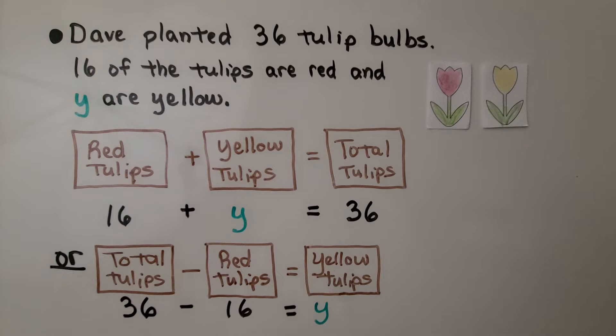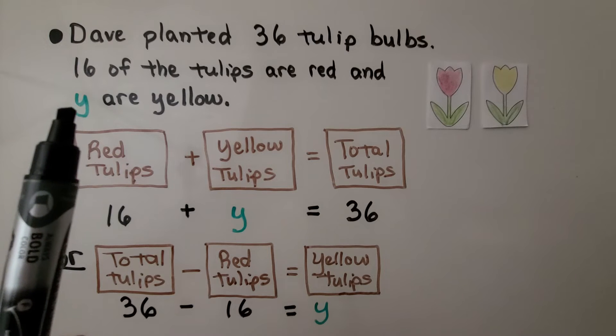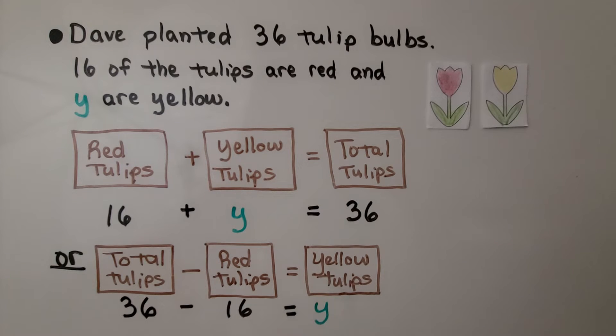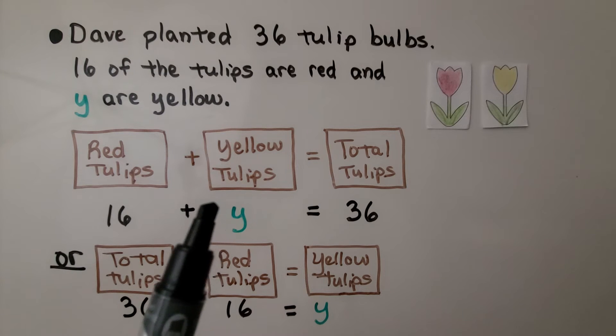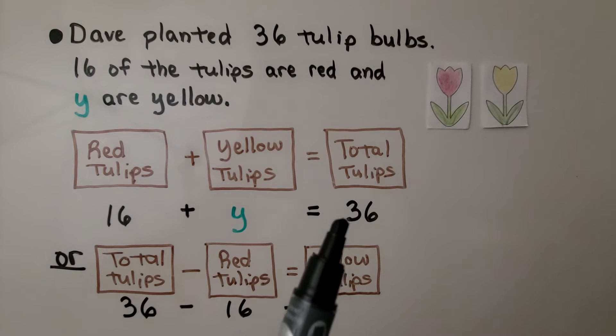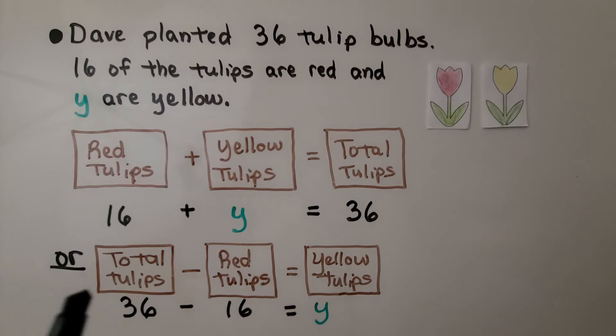Dave planted 36 tulip bulbs. 16 of the tulips are red, and Y are yellow. So we don't know how many are yellow, so we're just going to use the variable Y for yellow. We can add the red tulips plus the unknown amount of yellow tulips to equal the total tulips. Or, this might make more sense, we'll take the total number of tulips and subtract the red tulip number to find how many are yellow.